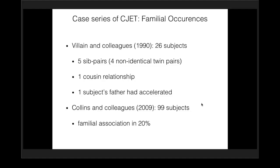Elizabeth Villain and colleagues in France identified 26 subjects with the disorder, finding five sib pairs — all non-identical twin pairs — one cousin relationship, and one subject's father who also had accelerated junctional rhythm. We collaborated with Kathy Collins and published in 2009 on 99 subjects, identifying a familial association in about 20% of subjects in that series as well.